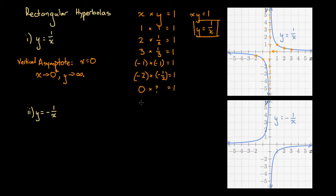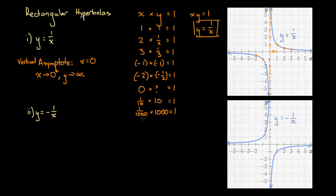As I take smaller and smaller x values that are almost zero, the y values get larger and larger. For instance, if I input one-tenth — a value close to zero — in order to retain x times y equals one, y must equal ten. If I had one over a thousand, you'd have to associate that with a y value of a thousand. As we get closer and closer to zero, we retrieve higher and higher y values from this rectangular hyperbola, and consequently we have a vertical asymptote at x equals zero.